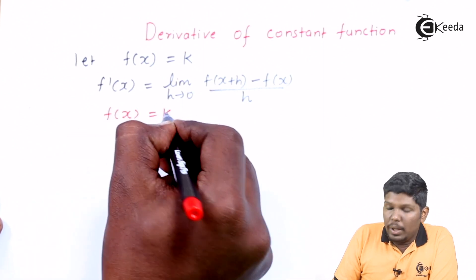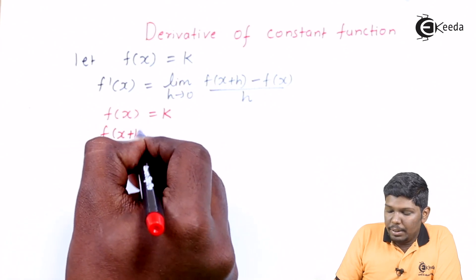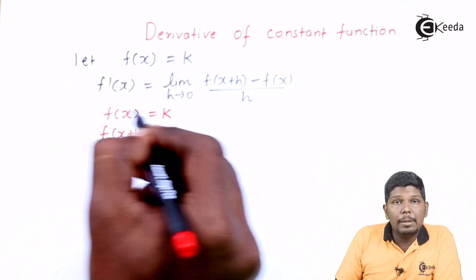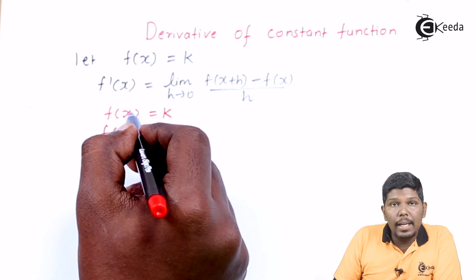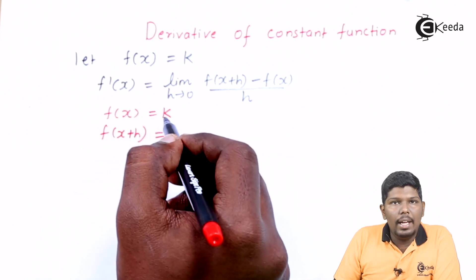f of x was equal to k, then we'll go for f of x plus h. To find f of x plus h, we are going to replace x by x plus h. Since we don't have any x in this function, we'll write k only.